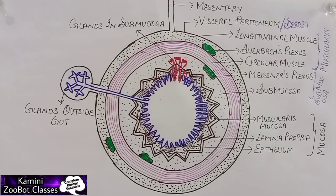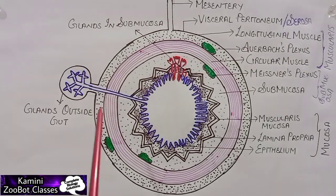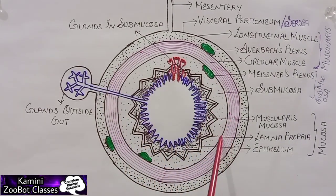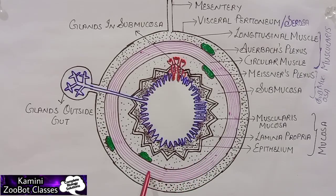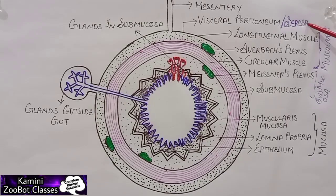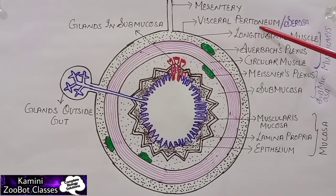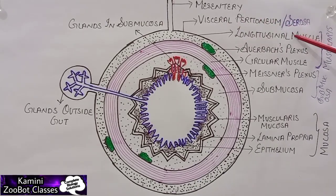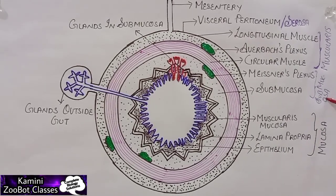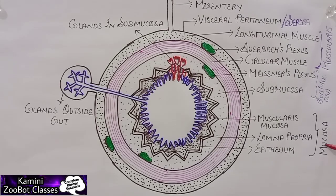Welcome to my YouTube channel Kamni Zubot Classes. Today's topic is the layers of the gastrointestinal tract. This is the structure of the basic four layers: serosa, muscularis, submucosa, and mucosa.